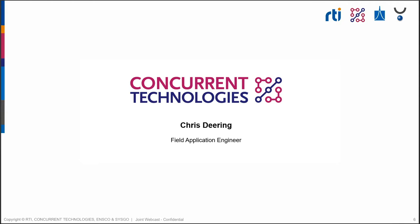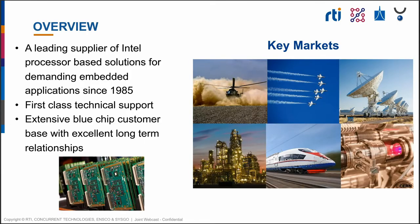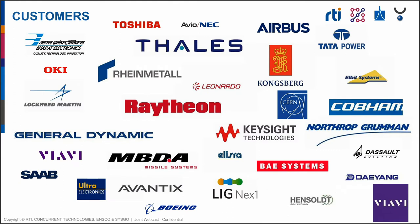Hello, my name is Chris Deering and I'm a field application engineer here at Concurrent Technologies. We design and manufacture a range of high-performance Intel-based processors, including network switches, storage, and software products for embedded computing solutions. We manufacture all our products at our head office in Colchester, United Kingdom, to meet the highest level of inspection standards for long life cycle and reliable operation. Our products are used by many of the world's leading integrators within the defense, security, aerospace, and telecommunication sectors.